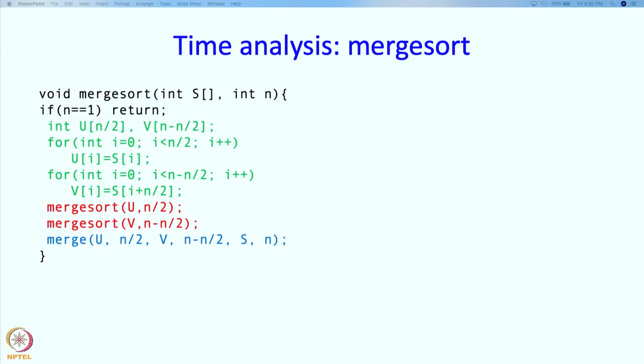We are going to analyze the time it takes, so we need some notation. Let us say that T_i is the maximum time required for merge sort to sort any sequence of length i. The time required might be different for different sequences, but I am just saying what is the maximum possible time to sort any sequence of length i. This is an unknown and we are going to put down some conditions on this unknown and then we will be able to estimate it.